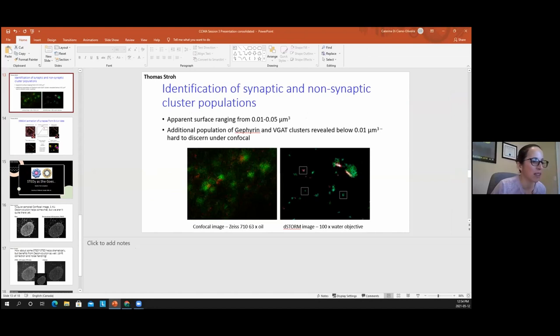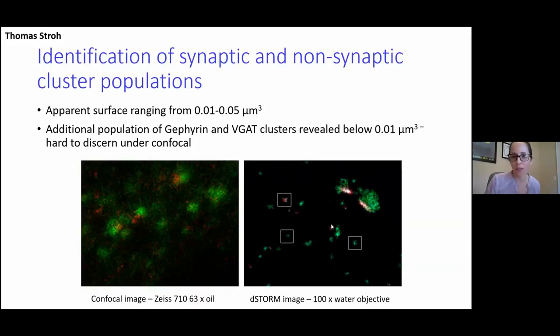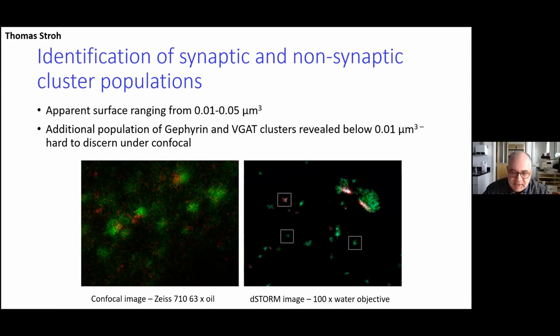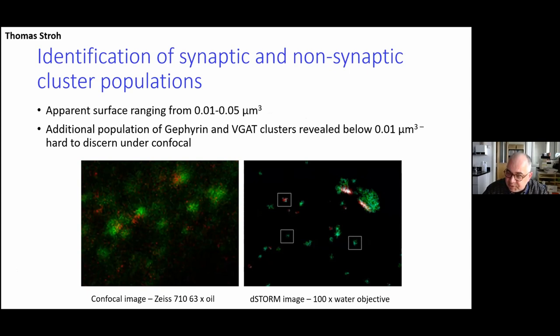Let's get into the rapid fire and share screens to highlight our panelists' most successful SRM applications. Thomas, you're up. The left panel shows a confocal image of mouse hypothalamus; the right shows a comparable area imaged on our STORM microscope. Green labels a protein of synaptic vesicles representing the pre-synapse, and red is the post-synaptic density — a receptor molecule.